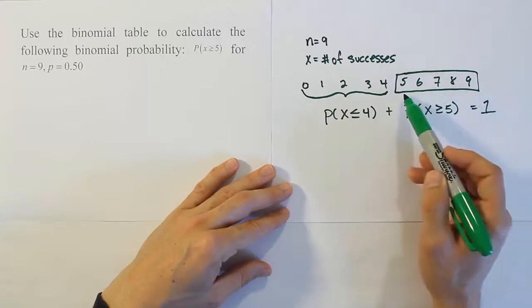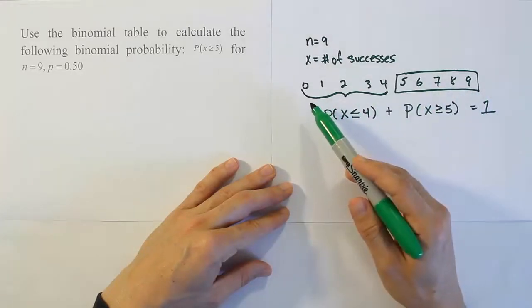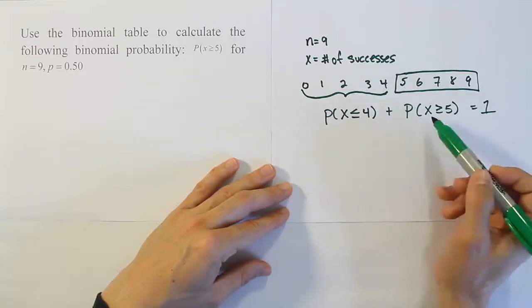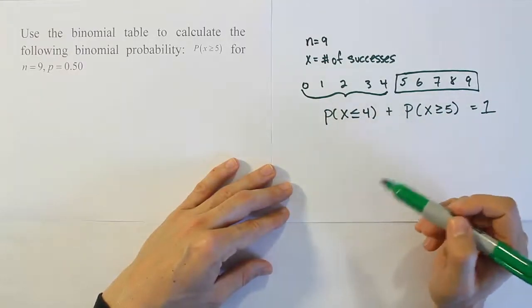If I give it 9, it's going to give me all the probability, it'll give me 1 as the answer. So the bottom line is the only way I can get the table to do what I want is to be clever about it. If I want this part, I can subtract this part from 1. It's just algebra.